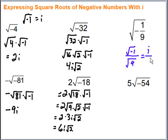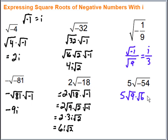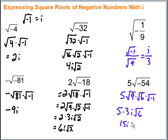Next we have 5 times the square root of negative 54. I'll try to do this in one step. The perfect square factor of 54 is 9. So we have the square root of 9 times the square root of 6 times the square root of negative 1. Simplifying: 5 times 3 times i times the square root of 6. That gives us 15i√6.